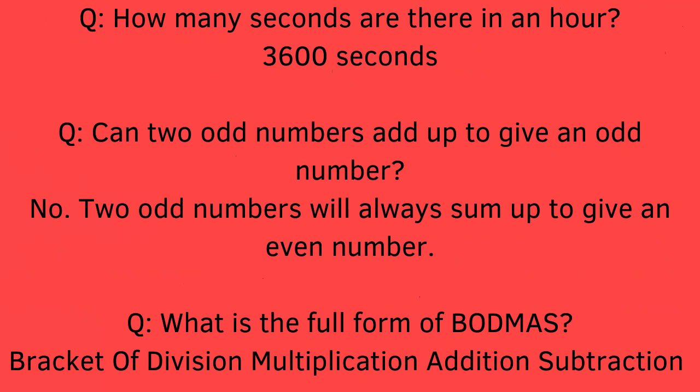Question: Can two odd numbers add up to give an odd number? No. Two odd numbers will always sum up to give an even number.